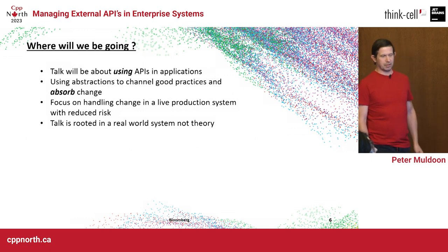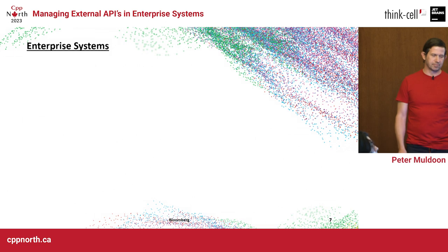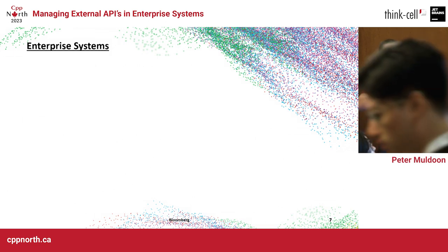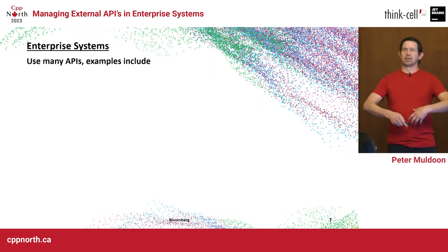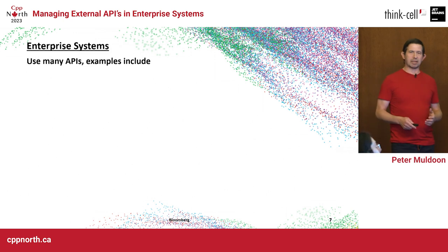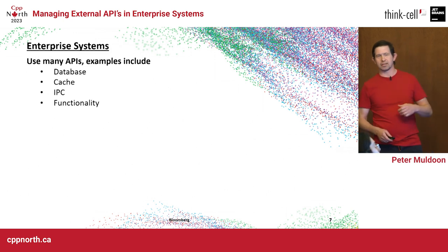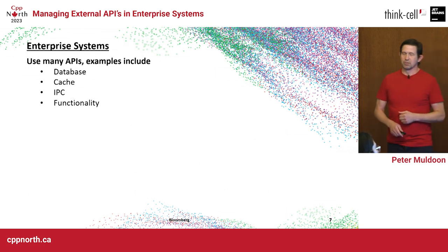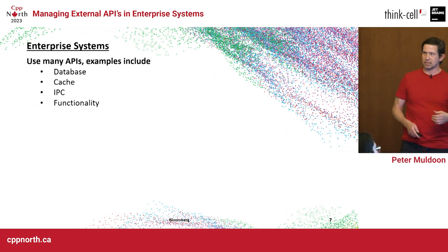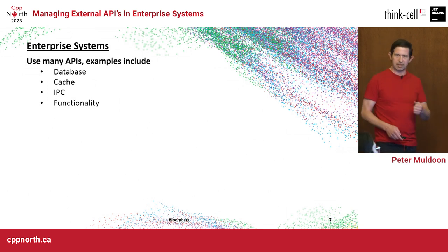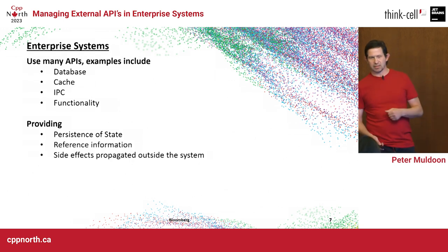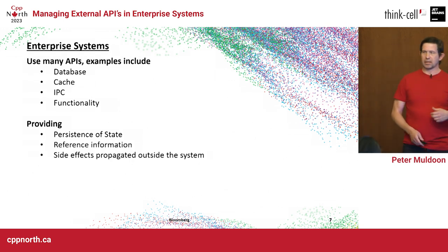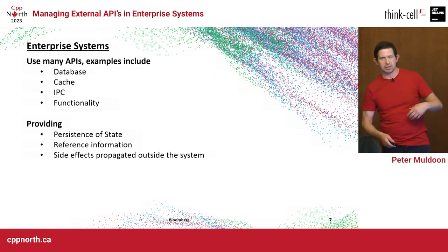This talk is rooted in the real world — this is a real problem I had. Enterprise systems are large-scale systems that usually go beyond one team. We use many APIs when we drag an application together: APIs that encapsulate interaction with the database, APIs for caching, for IPC to communicate with the external world, and for blocks of functionality. We persist state, get information our system doesn't have, and propagate side effects outside the system.